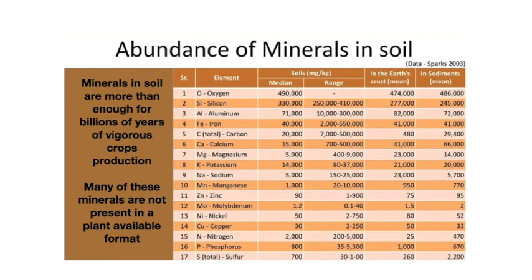Why, then, are we using synthetic fertilisers to grow our food if our soils have an abundance of minerals? The problem is that these minerals are not present in a plant-available format — this means that plants can't access them. We should ask ourselves how plants dominated the planet before us, and what it is that's enabled plants to access these minerals for the past few million years without the need of synthetic fertilisers.